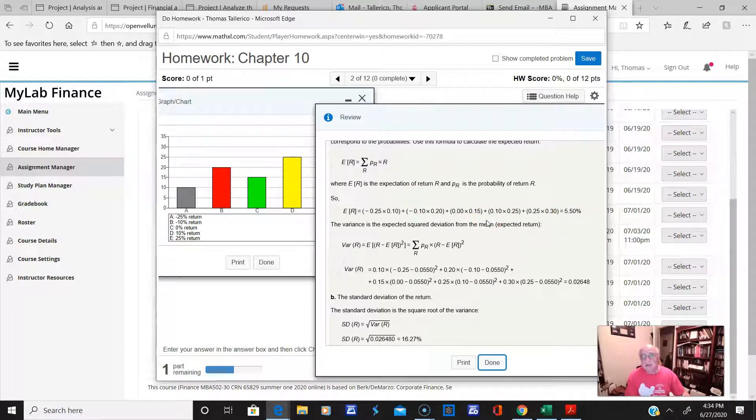Now, the variance is simply this equation right here. The probability times R minus the expected return squared. So here's the expected return squared. So again, you do the probability and you do the return, and here's the expected return, and you square it, and then you just got to add each one up. Sigma means sum them up.